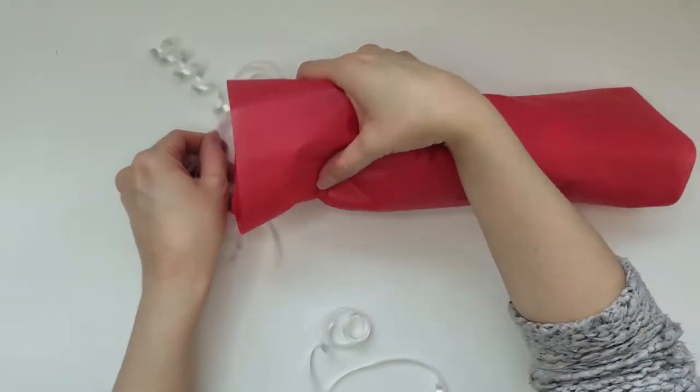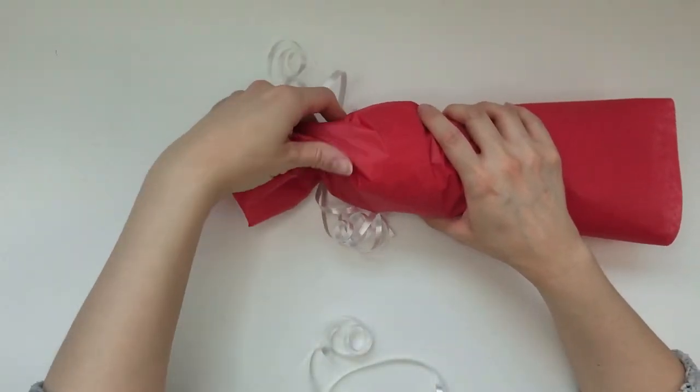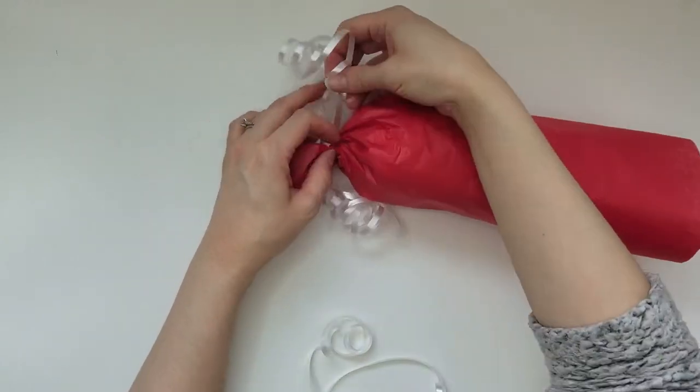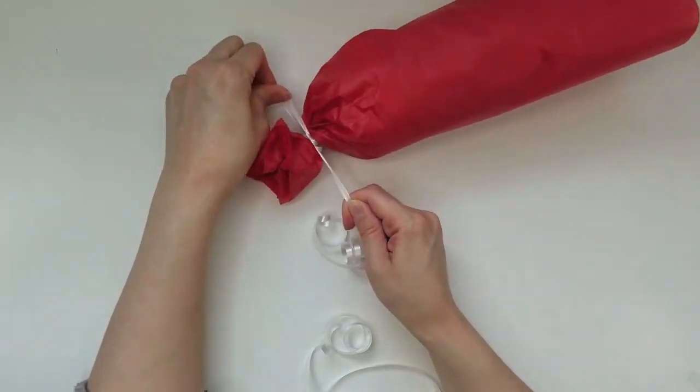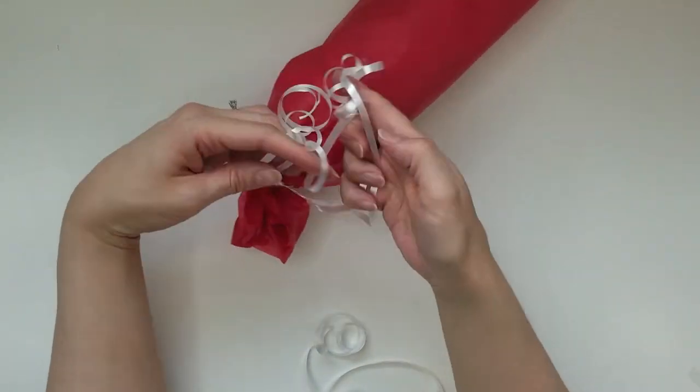Take one end of the wrapper and twist it. Then tie the ribbon around it. Make a very secure knot. We don't want it to slip off the end.